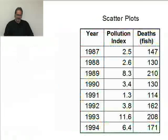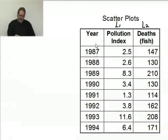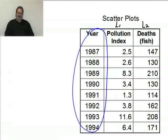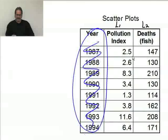Here's the bivariate data. I'm going to put the pollution index in list one and the deaths in list two. The year column we're not going to use — it's an index that tells us what year the data came from, but we're not doing any temporal analysis, so I'm ignoring it completely. I'm looking at the pollution index and the number of dead fish.